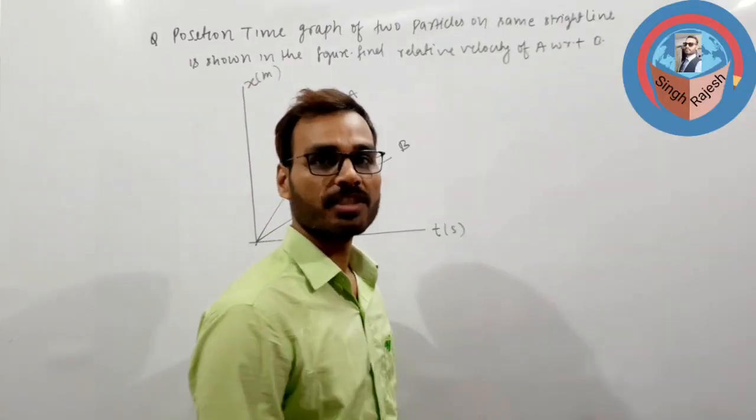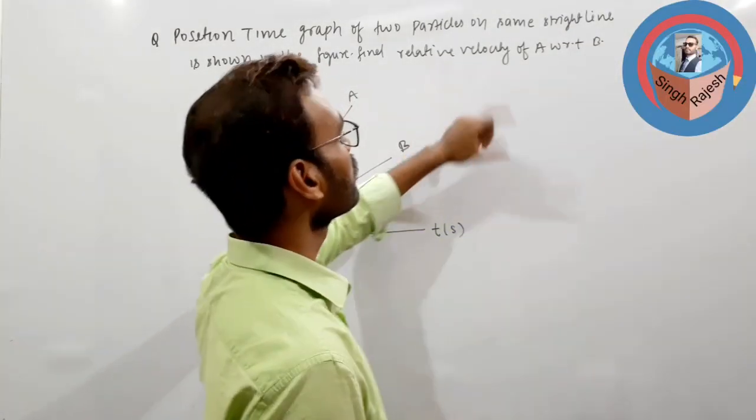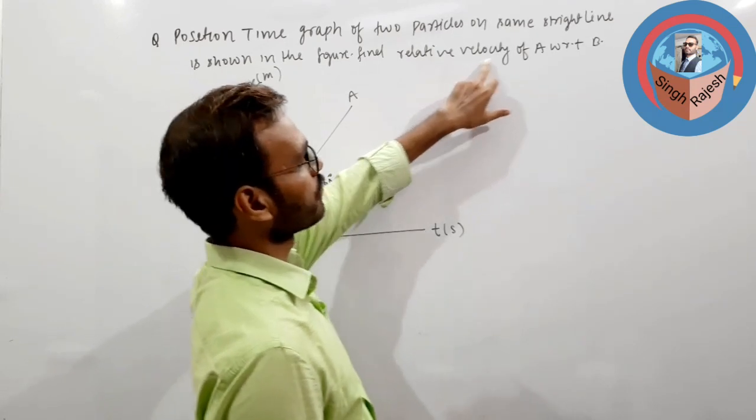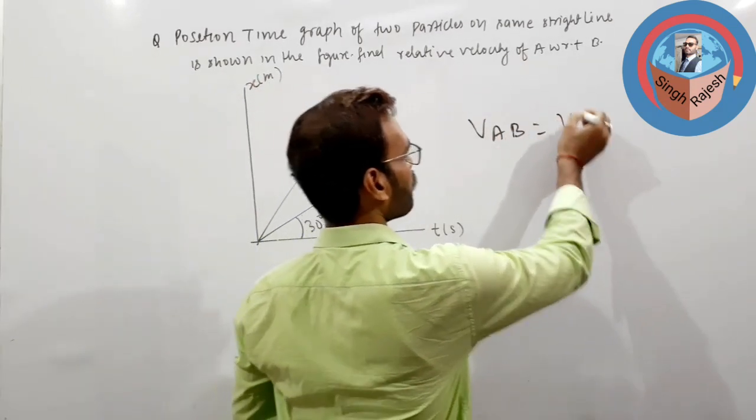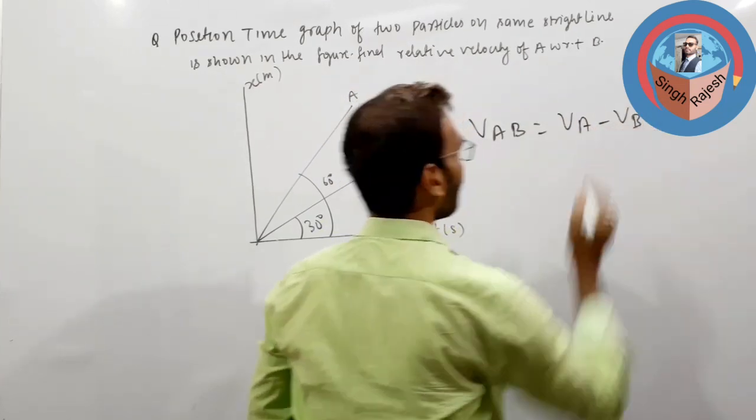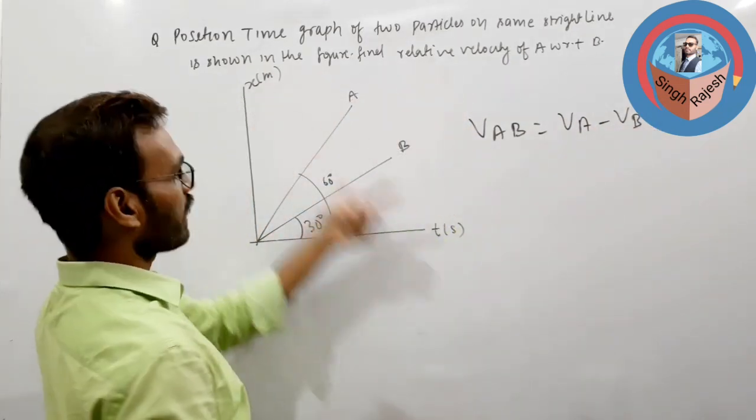Just see how you can tackle this problem. This is a relative velocity problem and you have to find the velocity of A with respect to B, which means velocity of A with respect to B. You can write VA minus VB, and that's nothing but the slope of the position-time graph.